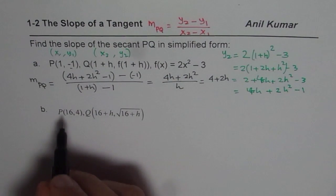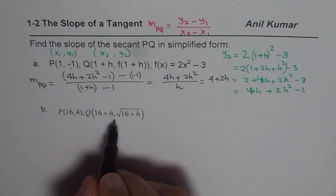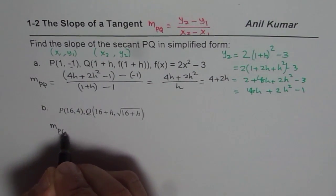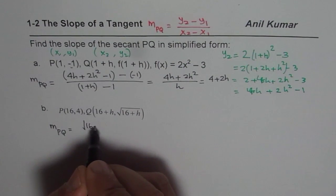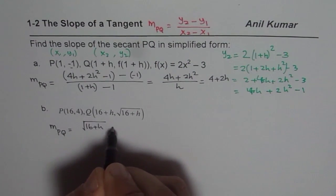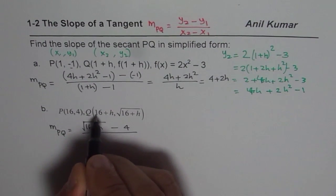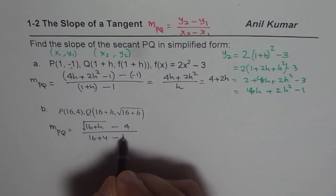Now let us do the next one, where P is (16, 4) and Q is (16+h, √(16+h)). So we can write this slope of the secant PQ as equals to y₂ value, which is √(16+h), minus y₁ which is 4, divided by x₂ value which is 16+h, minus x₁ which is 16.